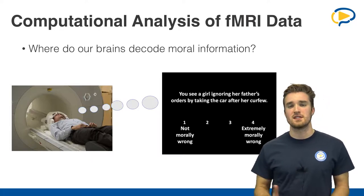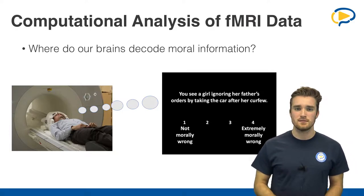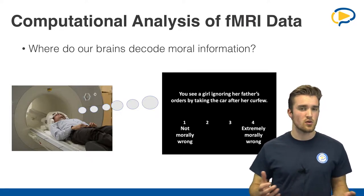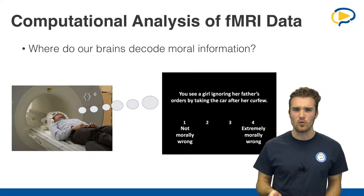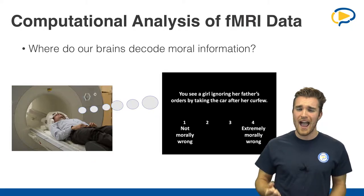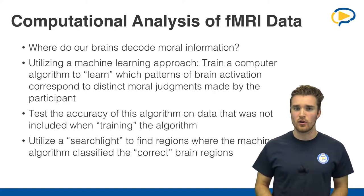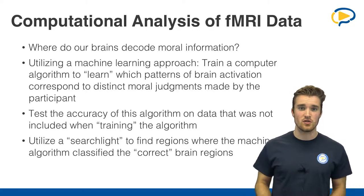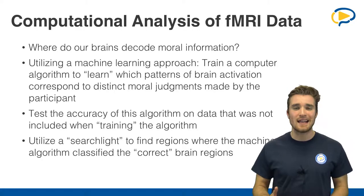We had participants simply rate whether this was extremely morally wrong or not so wrong. Then we asked ourselves: while people read these so-called moral vignettes — examples for specific moral violations — how do we find out which brain regions were activated? Here, again, computational approaches help us. To find out which regions corresponded to a certain stimulus — in this case, our moral violation examples — we trained a so-called machine learning classifier.